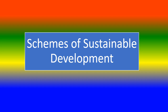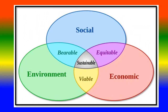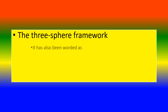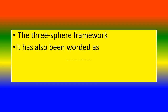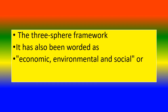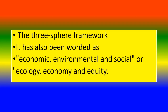Schemes of sustainable development. Look at this picture — social, economic, and environment. The intersections are: equitable, viable, and bearable, which together form what is sustainable. This is the three-sphere framework, worded as economic, environmental, and social — or ecology, economy, and equity.